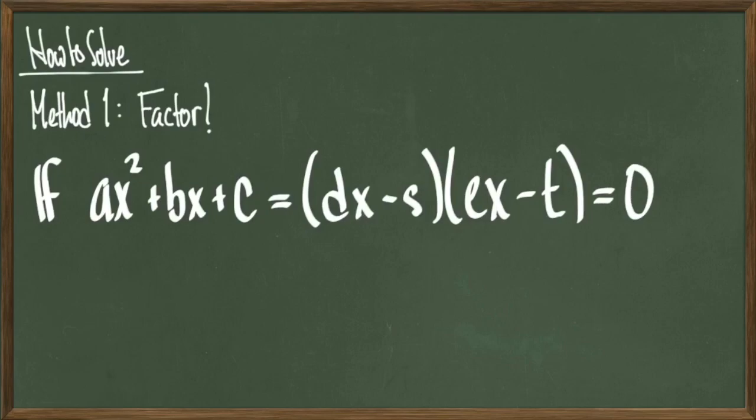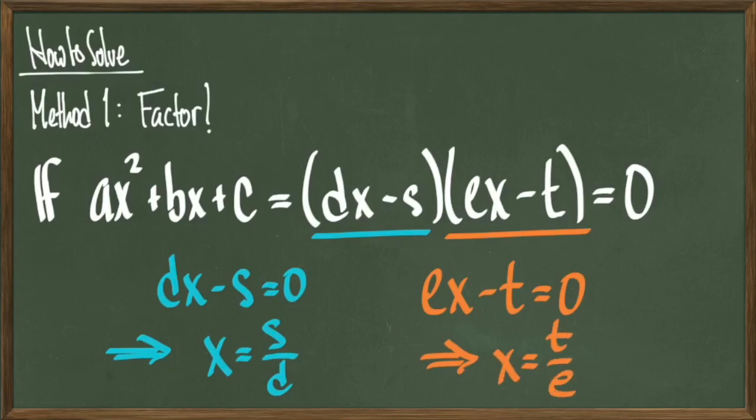The idea here is that I've gotten the entire polynomial written as a product of two different things. We also know that if I multiply 0 by anything, I get 0 as an answer. So what I need to look for are x values that make either the left quantity inside parentheses equal to 0 or the right quantity inside the parentheses equal to 0. We essentially are going to get two different linear equations that we need to solve, and this is generally a pretty fast process. The quantity on the left will give us the equation dx minus s equals 0, which simplifies to x equals s over d, and the quantity on the right gives us ex minus t equals 0, which simplifies to x equals t over e.